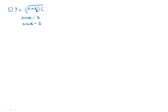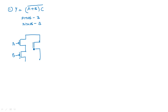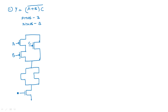For the pMOS network: A and B are in the sum (A + B), so the pMOS transistors for A and B are in series, and the transistor for C is in parallel with that series combination. For the nMOS network: A and B transistors are in parallel, and the C transistor is in series with that parallel combination.